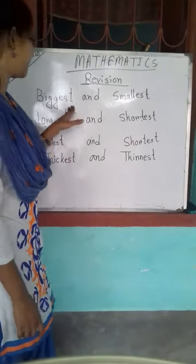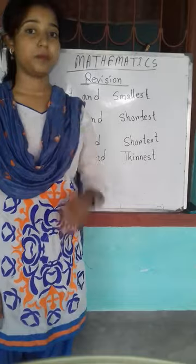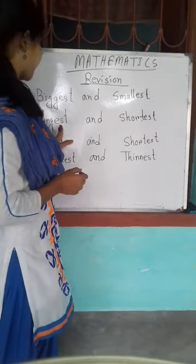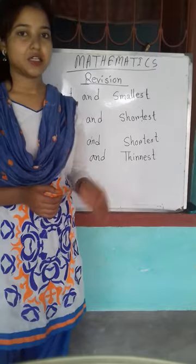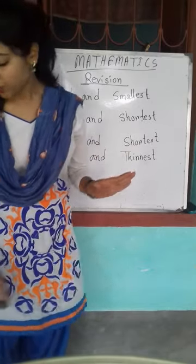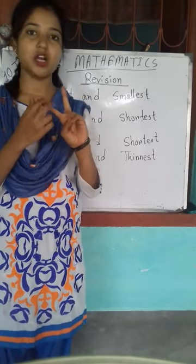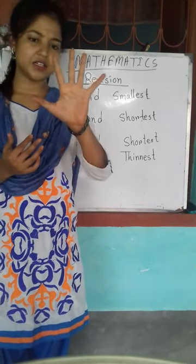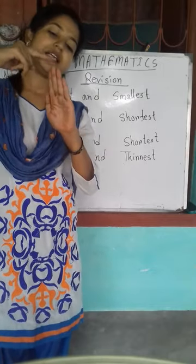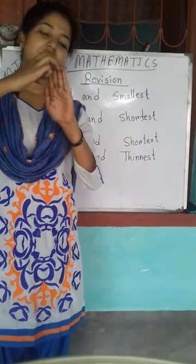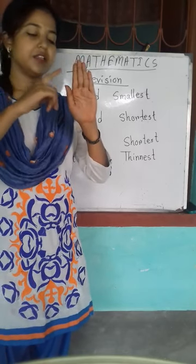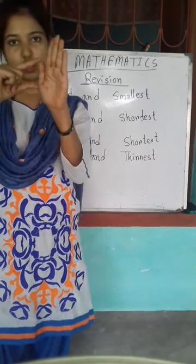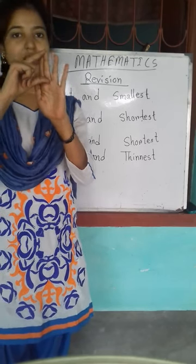So to recap: big and small, biggest and smallest — when there are more than two objects, you measure how much space something is taking. For longest and shortest, we measure the length. If there are two objects, we say longer and shorter; if more than two, longest and shortest. For example, on my fingers — if I put them together, the middle finger is longer than the small finger or the thumb. The thumb finger is shorter and the middle finger is longer, so longest and shortest.